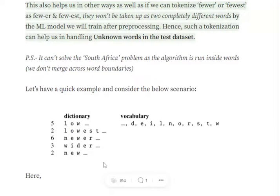'wider' three times, and 'new' two times. It's just an example. Now notice that the ending of each string is mentioned by an underscore sign: low underscore, lowest underscore, new underscore.